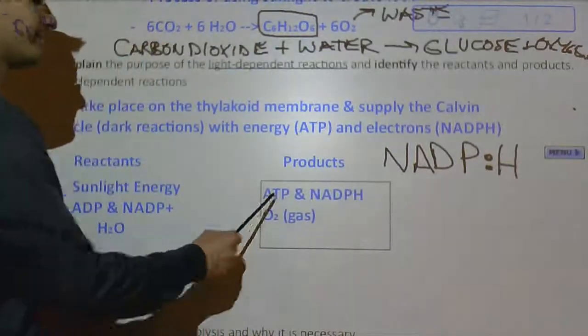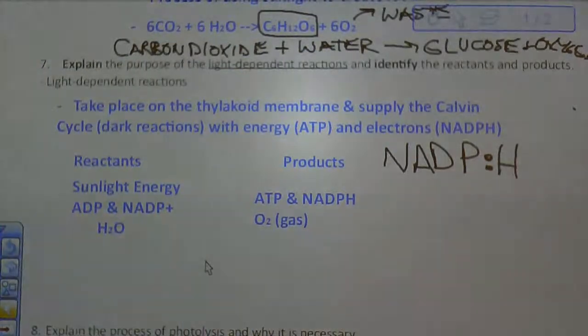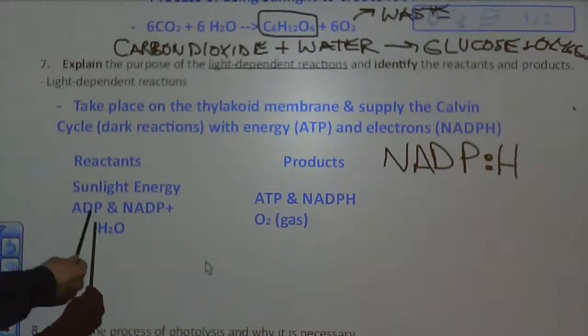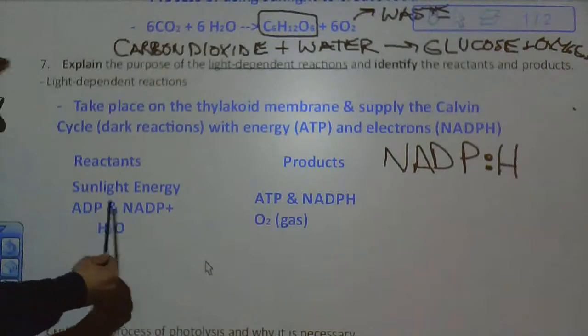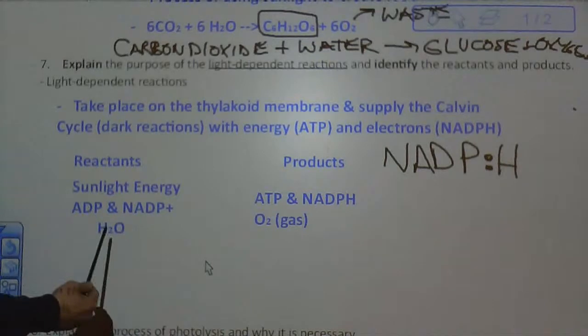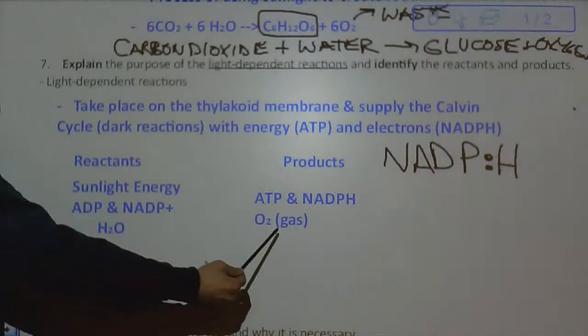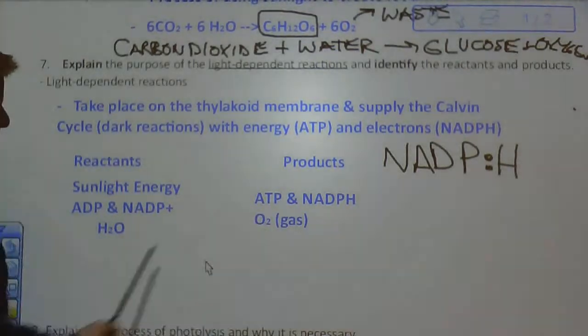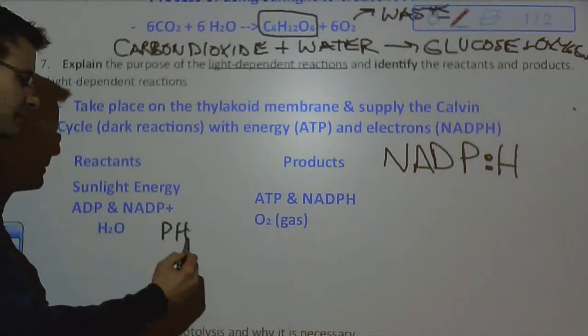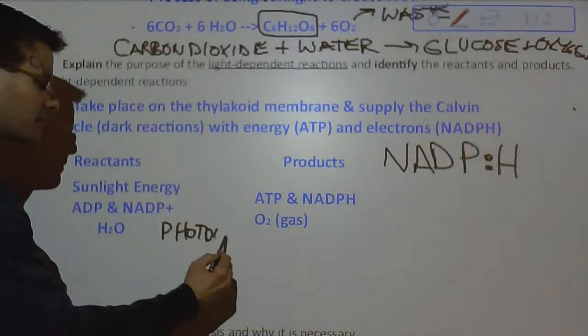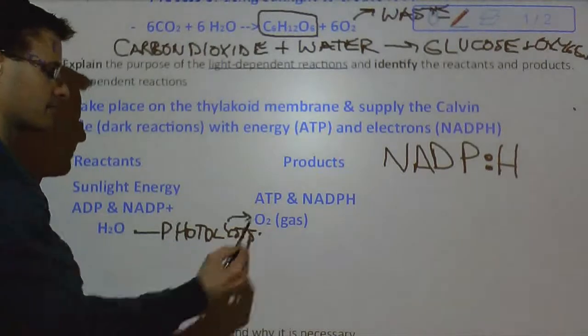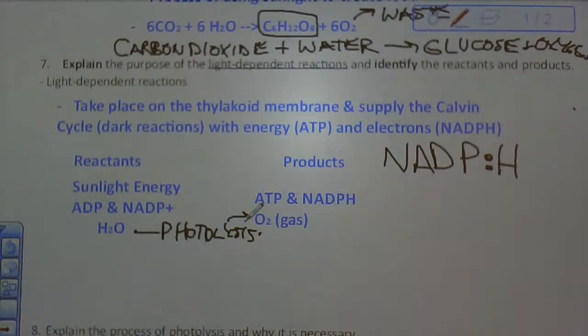And we'll see why in the light reactions, plants need water, one major reason. And here are the products, and they're also arranged the same way. ATP is made from ADP. NADPH is made from NADP+. Oxygen gas is coming from the splitting of water. And that is called photolysis. To go from water to oxygen gas, it's called photolysis.